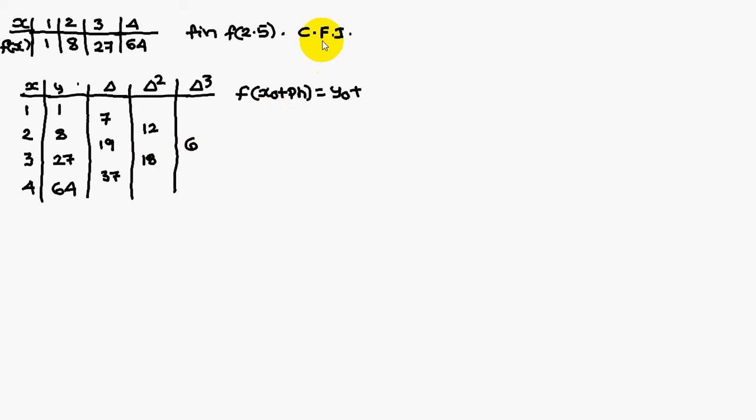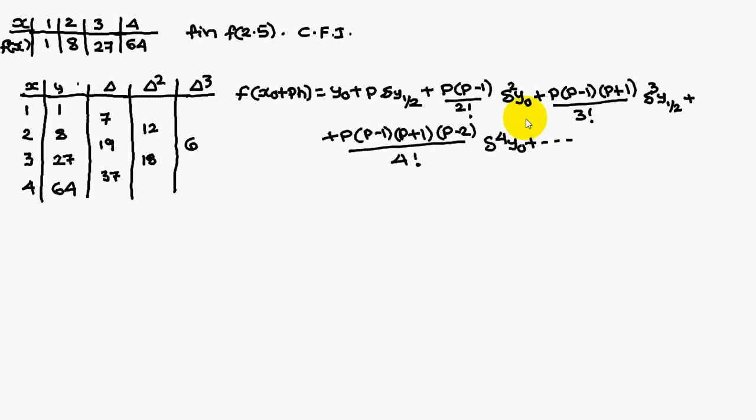Next, the formula for Central Forward Interpolation is y0 plus p delta y half, p into p minus 1 by 2 factorial into delta square y0, so on and so forth. How you have to remember the Central Forward Interpolation formula is, first you come across with y notation. Let us consider y0, delta y half, delta square y0, delta cubed y half, delta power 4 y0.